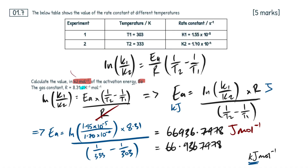We do not want this many significant figures. We need to look at our table and work out the lowest number of significant figures given in the data. Here it's three, here three, here three, here three — and the gas constant is also three sig figs. So the lowest is three, and our final answer is 66.9 kilojoules per mole.